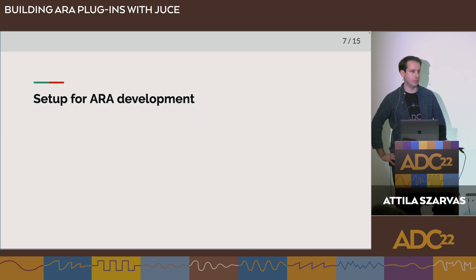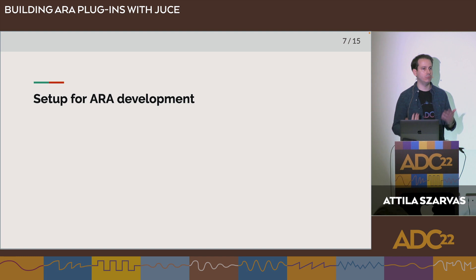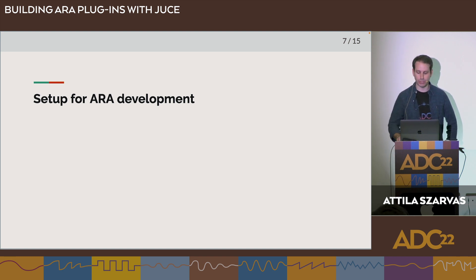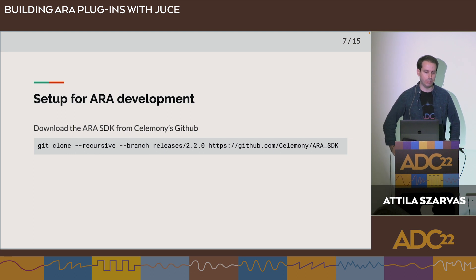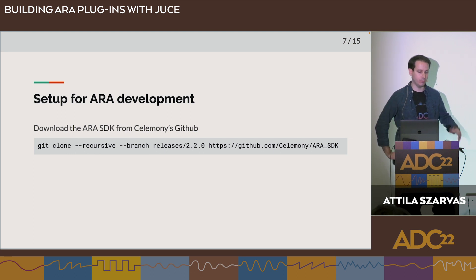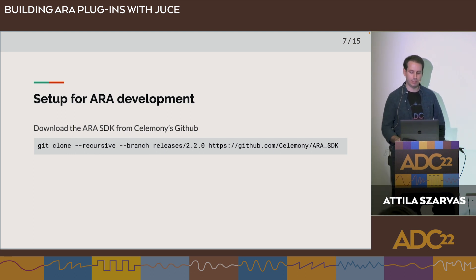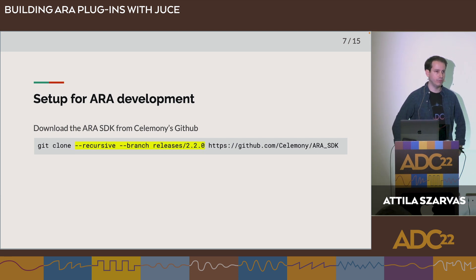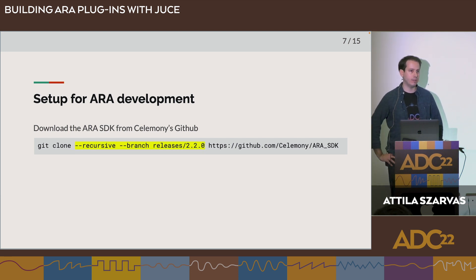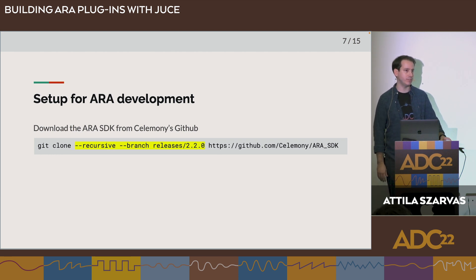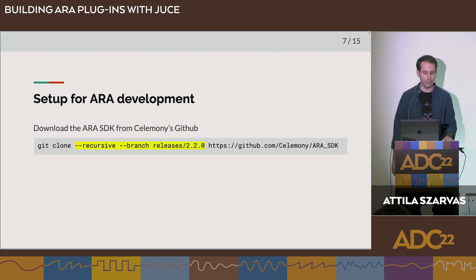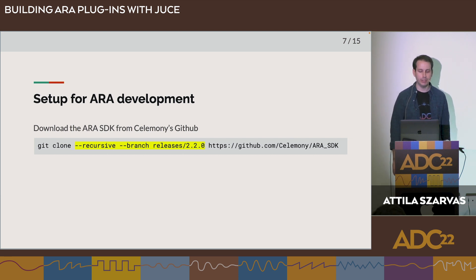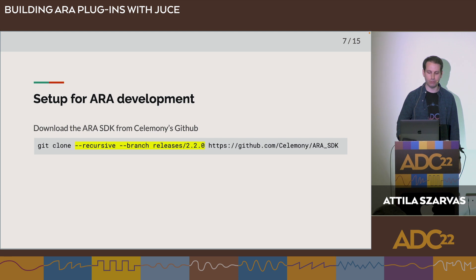The ERA SDK does not ship with the JUICE framework, so you need to download it separately and configure the producer and CMake to use it. Acquiring the SDK is as simple as using a git clone command. It's important that you use the recursive option and specify the ERA SDK version, which is currently 2.2.0 on the develop branch, or 2.1.0 on the latest stable branch — you'll find that information in the JUICE documentation.